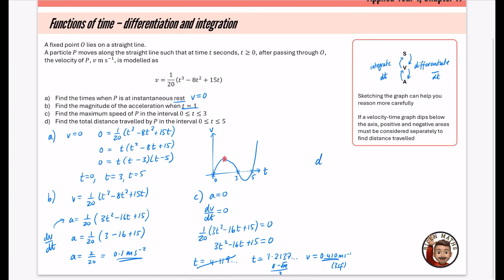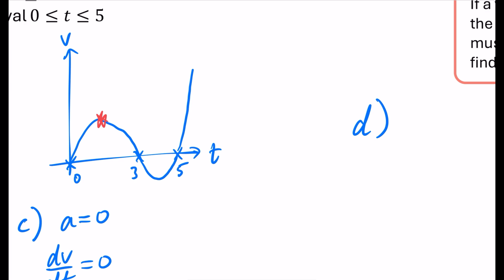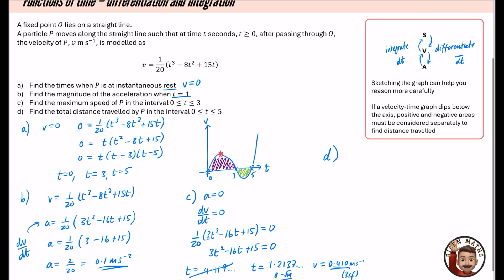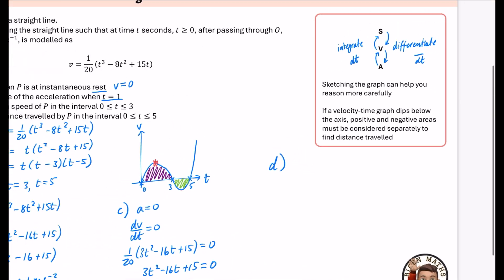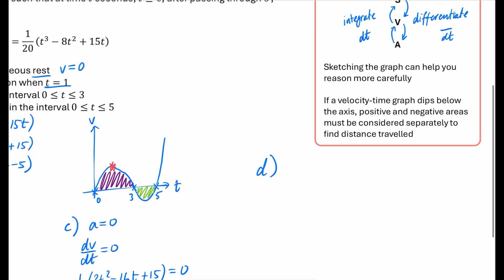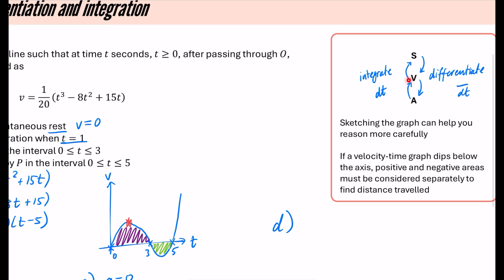The last part of this question is, we are going to find the total distance traveled by P in the interval between 0 and 5. Between 0 and 5, we need to find the area of this part and the area of this part. This is exactly why I've written about the positive and negative areas. The purple part will be positive. This is going to be negative, so we'll need to negate that answer. When you integrate, that gives you the distance because we're going from velocity to displacement or distance.